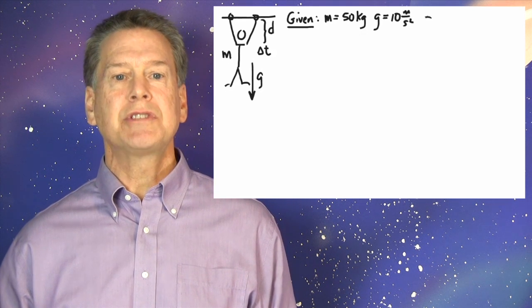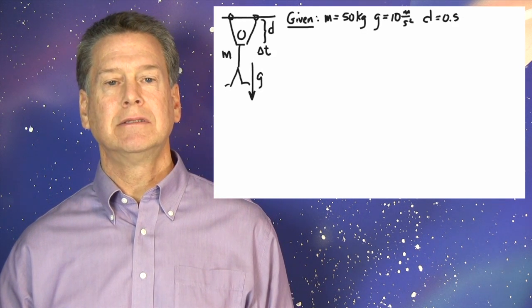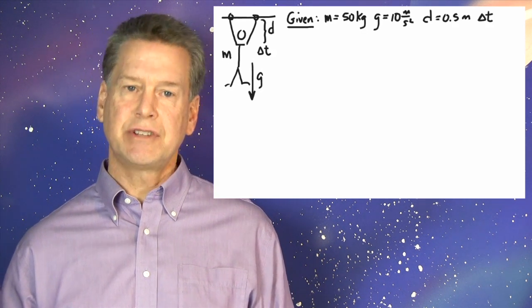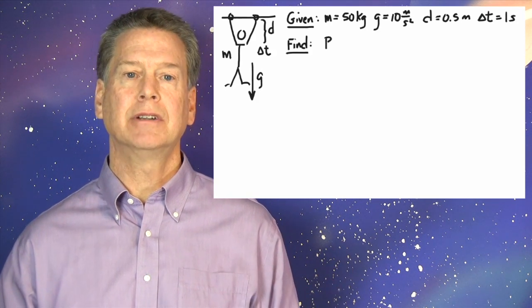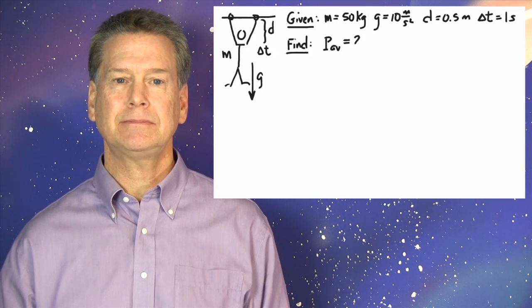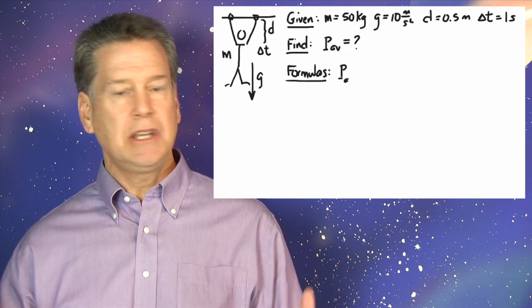G equals 10 meters per second per second. D equals 0.5 meters, half a meter, or less. P sub AV equals what?